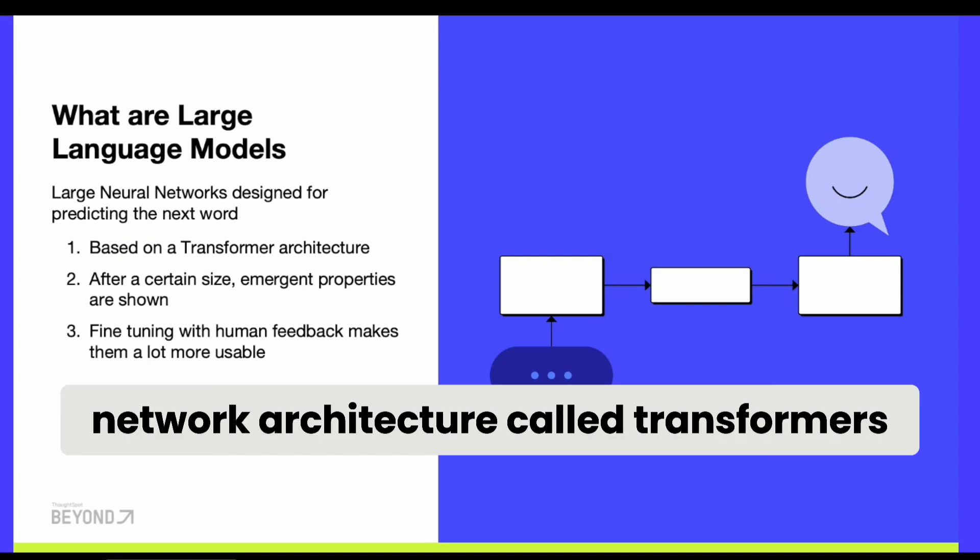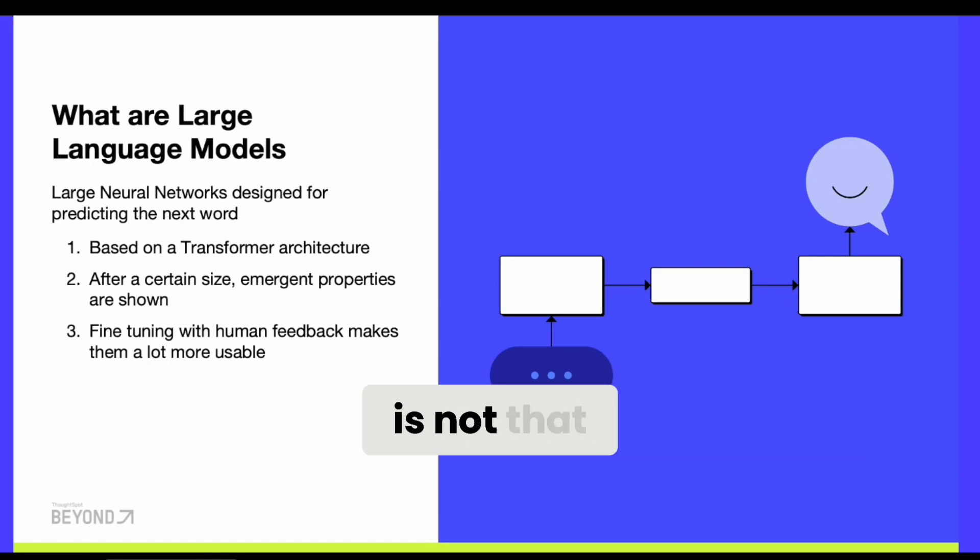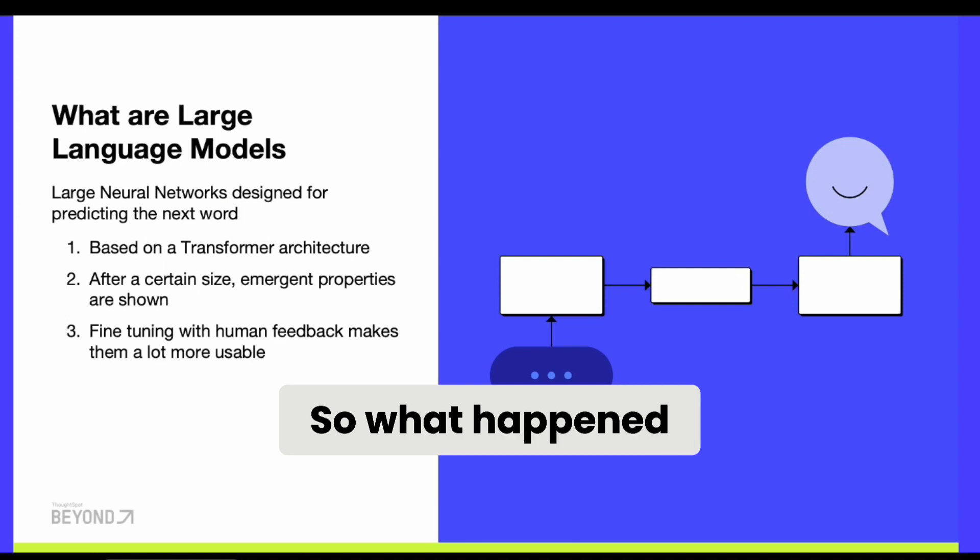called Transformers. What makes them really interesting is not the fact that they can predict the next word, but the emergent properties that these networks show. As these models got bigger and bigger, all of a sudden they started showing properties that no one actually designed them for or planned for.